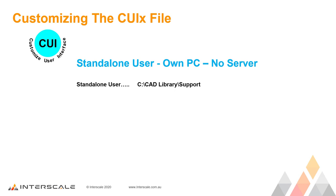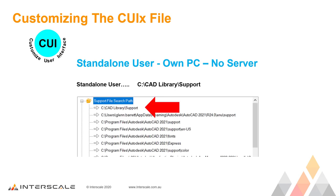and another subfolder under that called Support. Save the new CUIX file into here. The next thing to do is in AutoCAD, go into Options, and add this new path to the top of your Support File Search Paths so that AutoCAD finds and uses this folder and its files first.